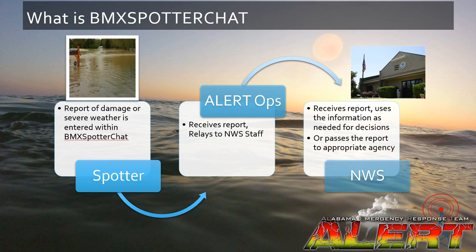This is incredibly useful, especially in cases where an outlying county on the fringe of our coverage area cannot reach the Birmingham W4CUE 146.88 megahertz repeater. It's also incredibly useful for anybody who is not a licensed ham radio operator but is a Skywarn trainee. In this image you'll see the basic structure of how Spotter Chat works and how it falls into play with Skywarn and Alert.